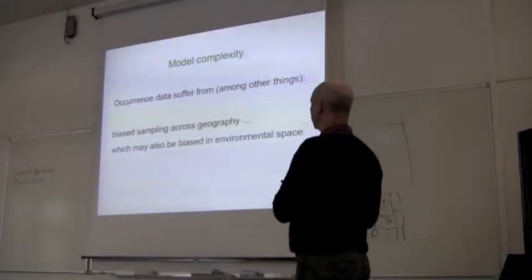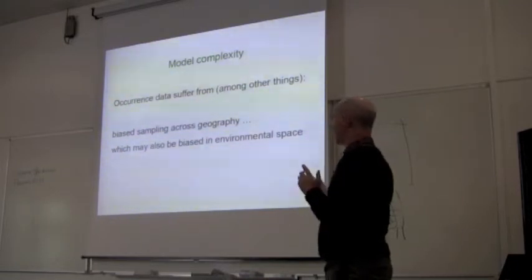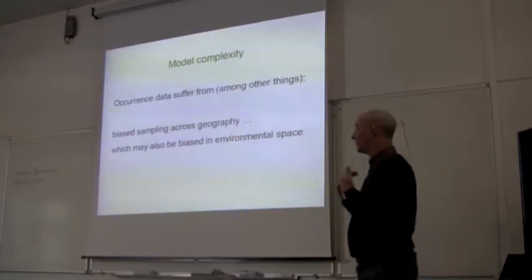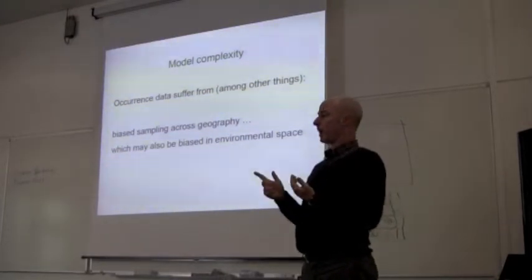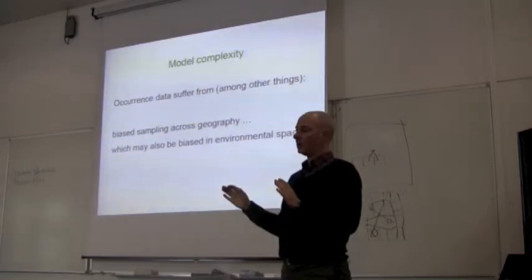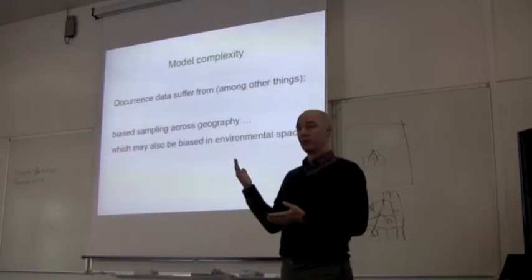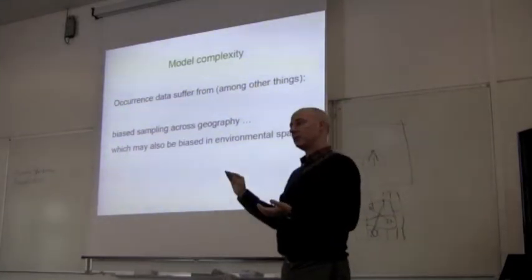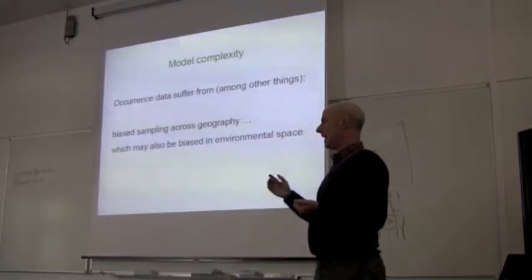As we've gone through several times, our current status suffers from several things. Among others, as Chris was talking, are biased samples in geographic space, which may also be biased in environmental space. And these are both problems. Even if you only have biased sampling in geography, it still can affect your evaluation and inflate your estimates of performance. The even worse problem is when those biases in geographic space correspond to biases in environmental variables.